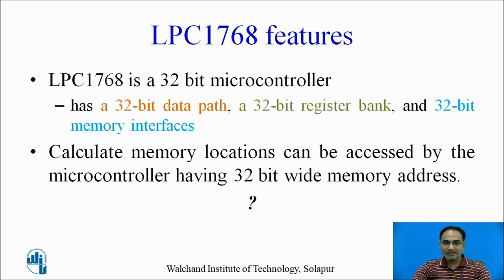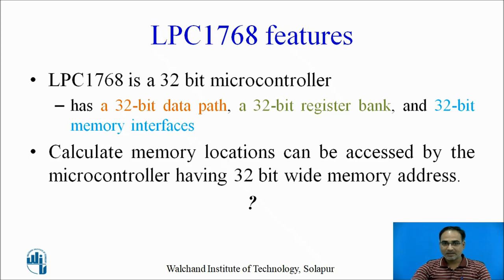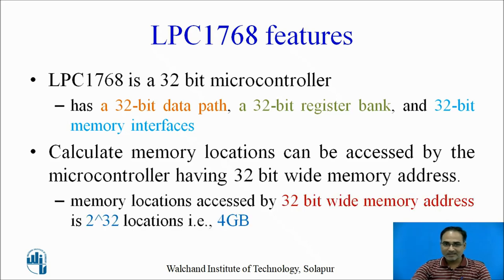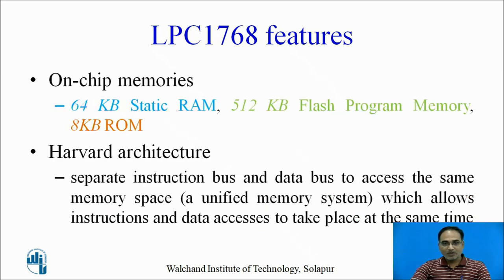The LPC 1768 is a 32-bit microcontroller, meaning it has a 32-bit data path, 32-bit register bank, 32-bit memory addresses, and a 32-bit ALU unit. Using 32-bit wide memory addresses, this microcontroller can access a maximum of 4 GB memory space — the formula is 2^32, where 32 is the size of the program counter or memory address. The on-chip memory available includes 64 KB static RAM for storing data, 512 KB flash program memory for storing code, and 8 KB ROM for boot.